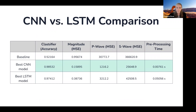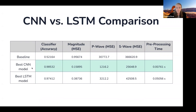Overall, here is a chart of the four targets I tried to predict: classifying earthquakes versus noise, predicting magnitude, P-wave arrivals, and S-wave arrivals. The baseline is shown here, the best CNN model results are shown here, and the best LSTM model results are shown here. Between the CNN and the LSTM, the CNN beat the LSTM in every category, including pre-processing time — it was actually faster to generate the images than to do the pre-processing for the LSTM. So the CNN was the best model.